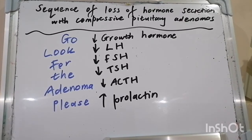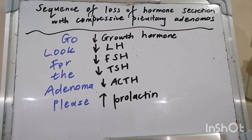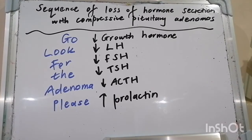Pituitary tumors can present in two major ways. Firstly, as a result of local mass effect, such as headaches, visual field loss — specifically bitemporal hemianopia — and loss of visual acuity. Secondly, through changes in pituitary hormone secretion.